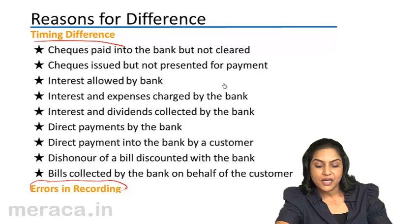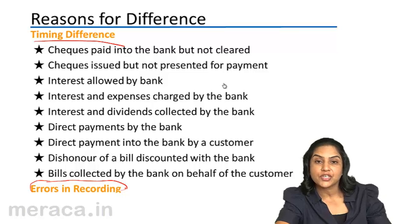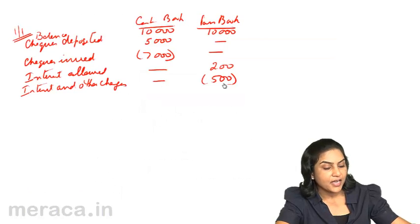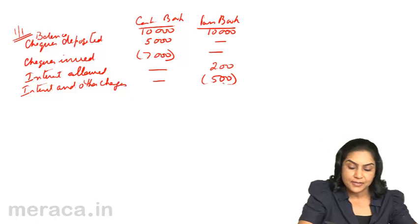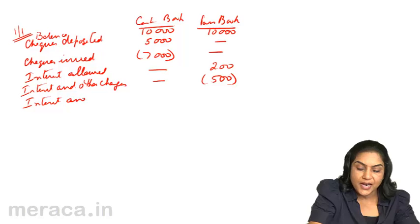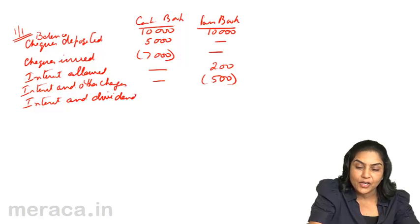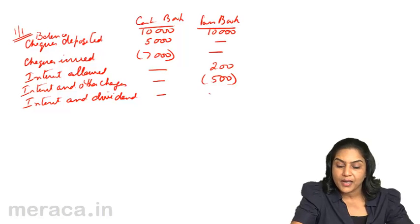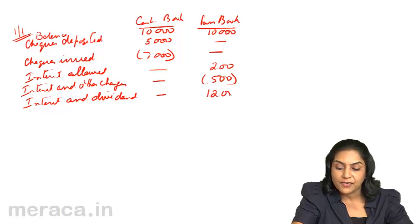Interest and dividends collected by the bank increase our balance in the passbook. The bank has directly collected on our behalf and we are not aware of it — let us say this amounts to 1,200.